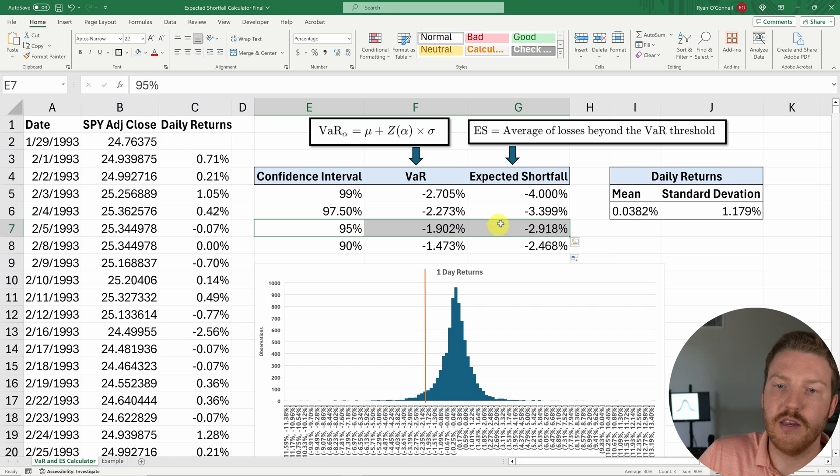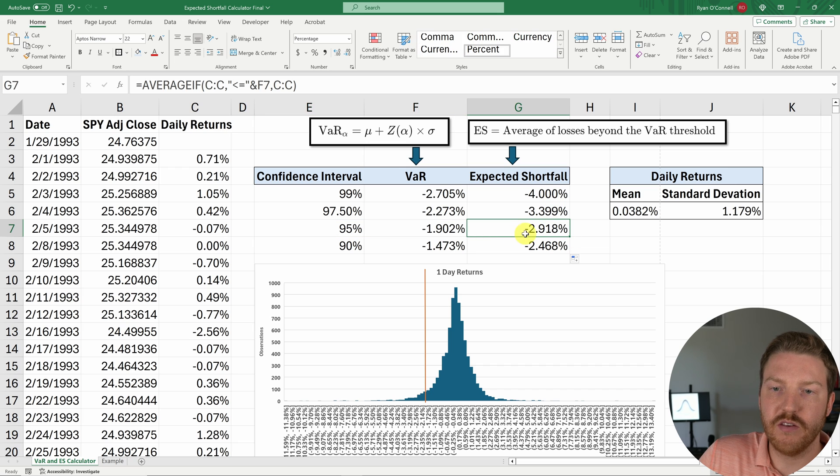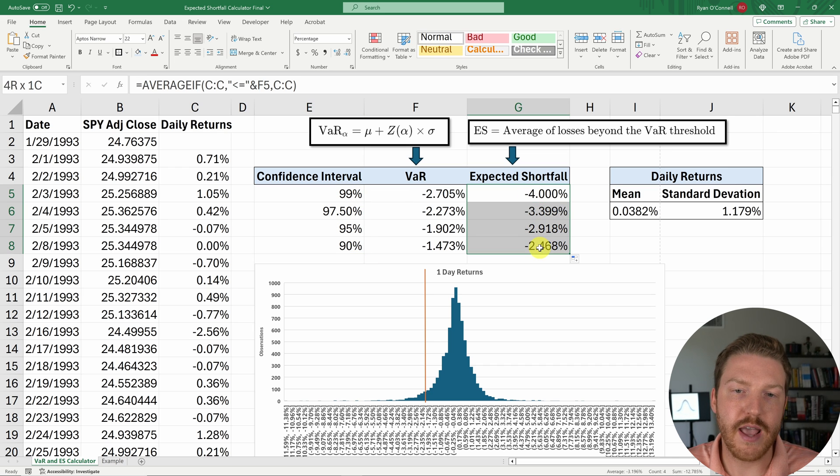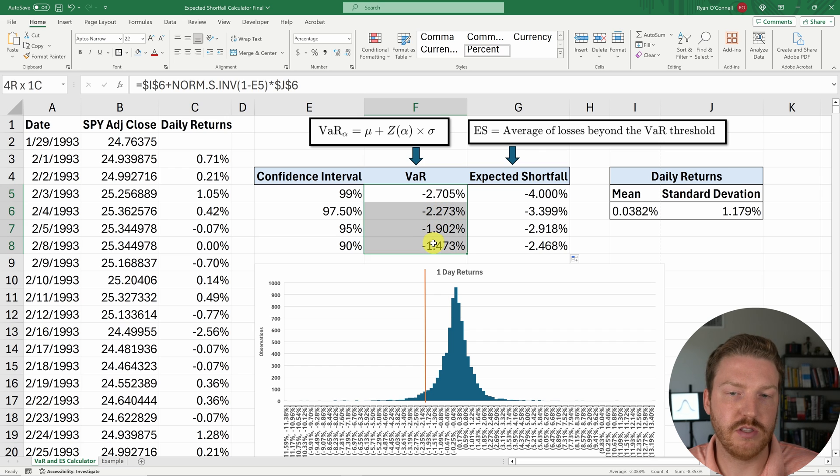And then sticking with the example of 95th percentile, we find that the average of all of these values is about negative 2.918%. And one thing you'll notice is that for any given confidence interval, the expected shortfall should always be more negative than the VaR value for the same confidence interval, because it's taking an average of everything that is less than it.